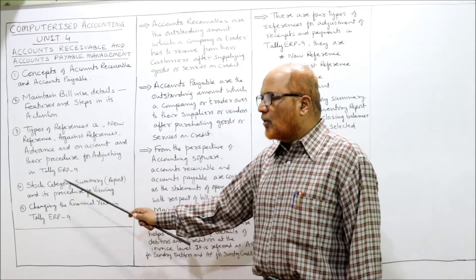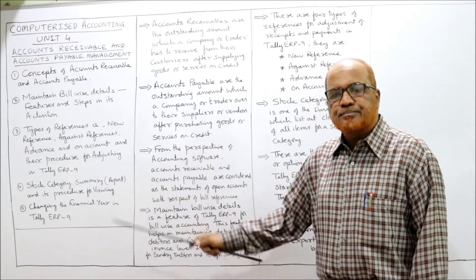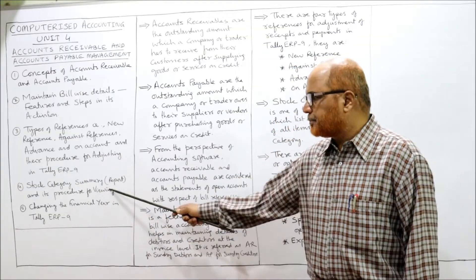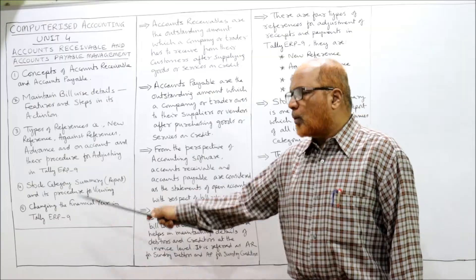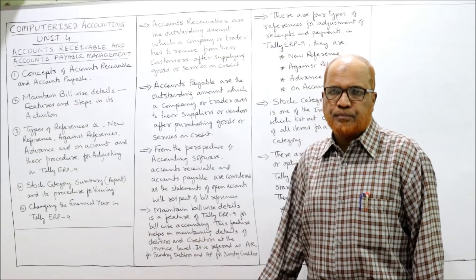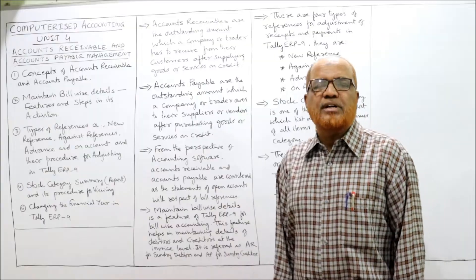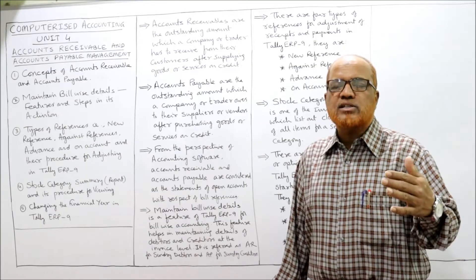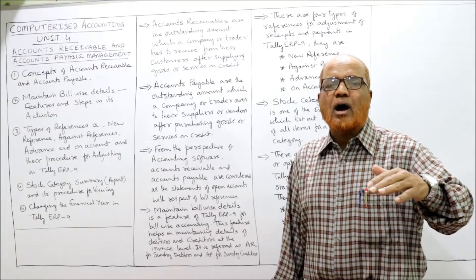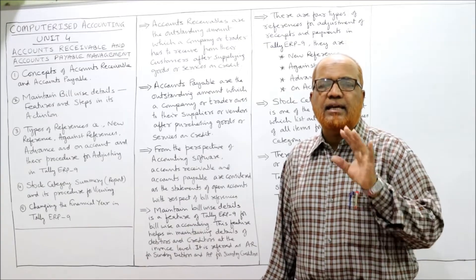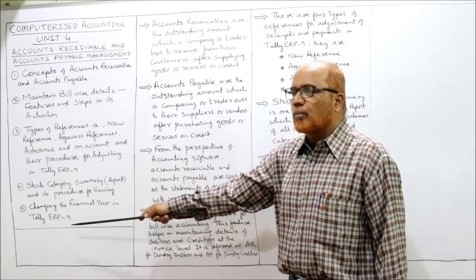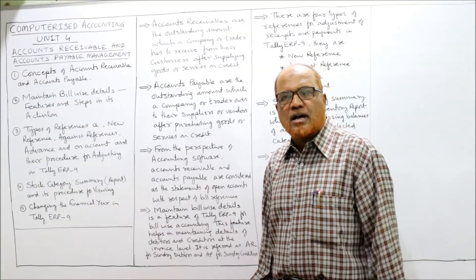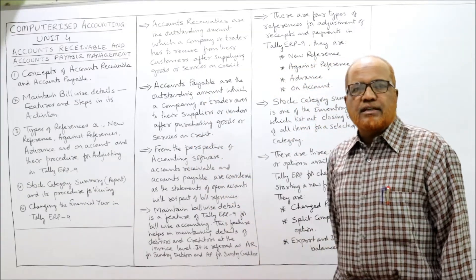The fourth topic is the stock category summary report and its procedure in Tally — what the stock category summary report is. The fifth and last topic is changing the financial year — what a financial year means and how to change it in Tally ERP 9. These five topics will be covered in this video, so watch until the end to get complete command of the subject.